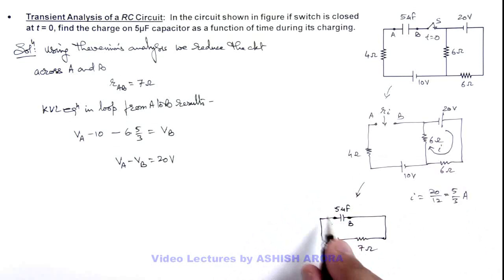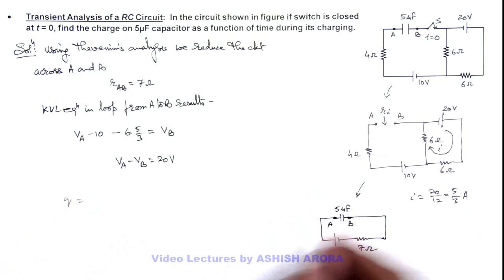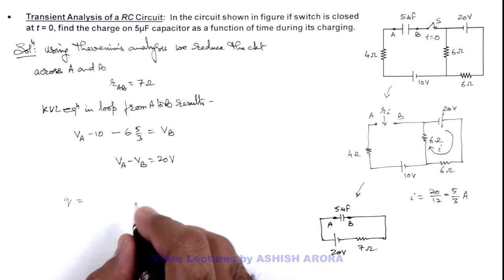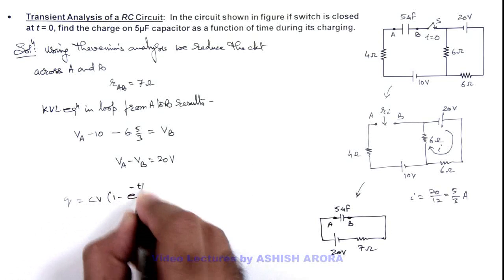Then it is a simple RC circuit for which if we wish to calculate the charge on capacitor, in charging of capacitor through a resistance and a battery, q we write as CV(1 - e^(-t/RC)).